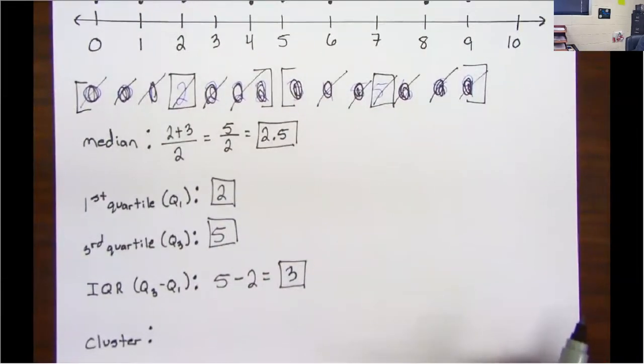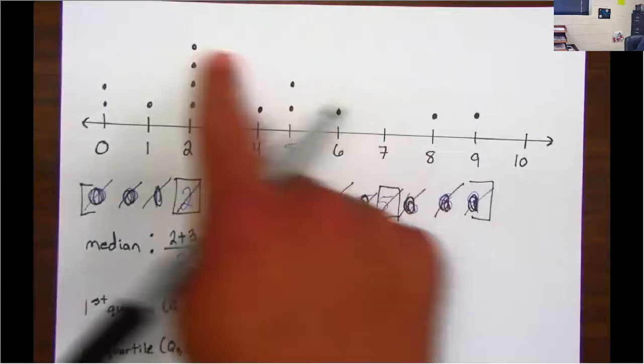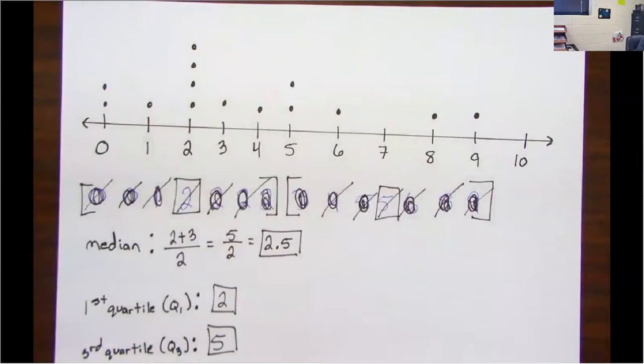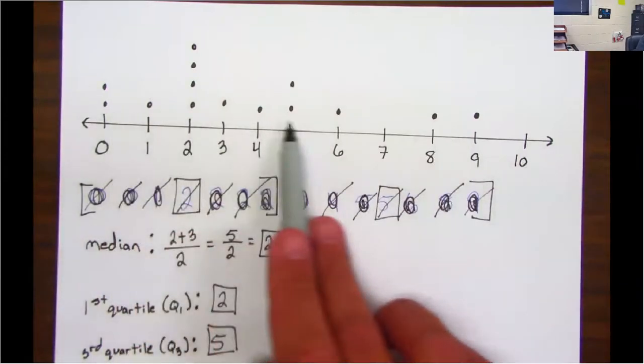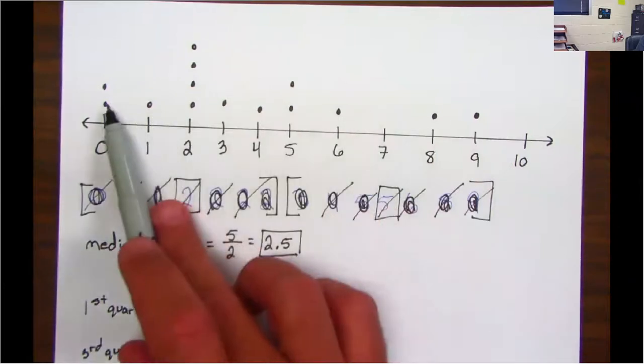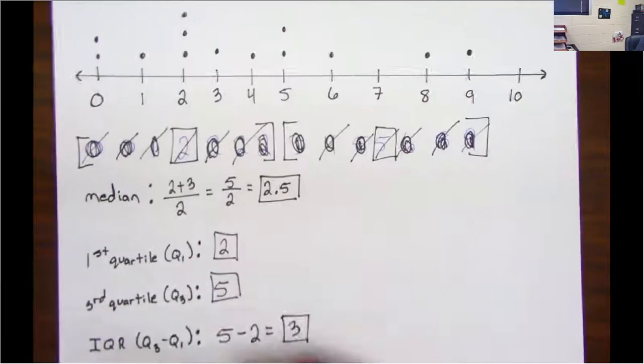Next one is a cluster. A cluster is where all the data is pretty much combined without any gaps. So in this case, notice how there's no gaps until you get to here. So the cluster would be between zero and six.